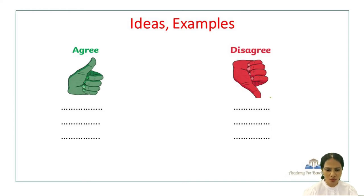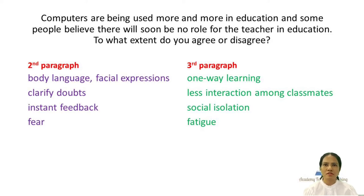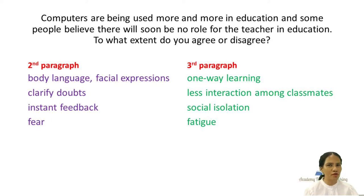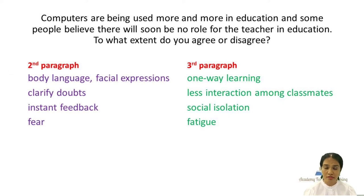Think of ideas and examples — if you agree, why you agree; if you disagree, why you disagree. Before we talk about how to write the first paragraph, we will think of ideas for the second and third paragraphs. Because it is purely a one-sided essay, we're going to write on one side. Personally, I think a live teacher is definitely a must. So I've decided that in my second paragraph I'm going to talk of the advantages of having a live teacher, and in the third paragraph the drawbacks of online learning.